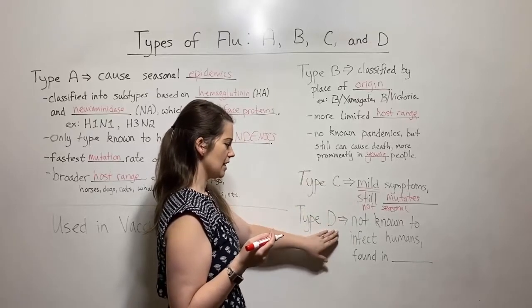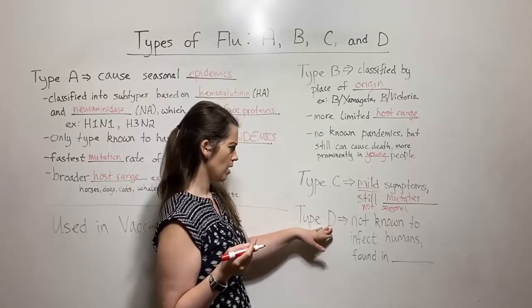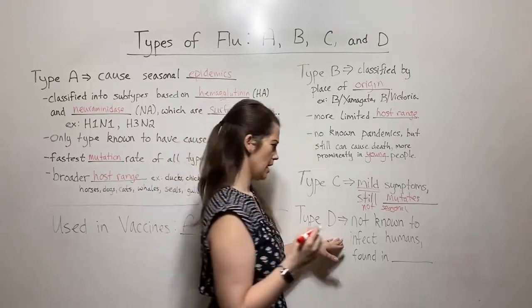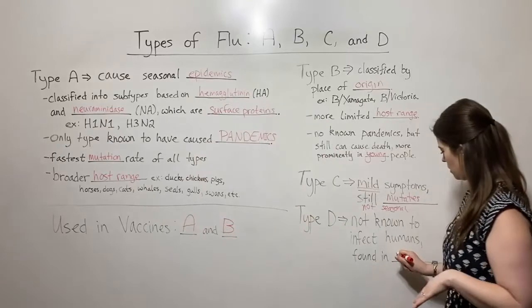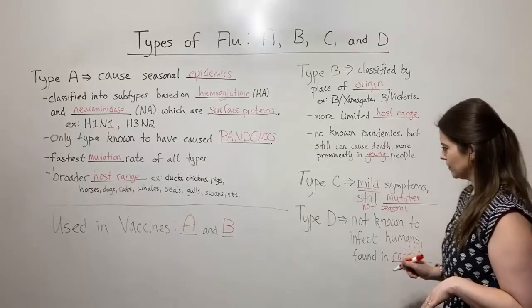And then type D, this one was discovered more recently, I think within maybe about 10 years ago. And it's not known to infect humans at all. It is however, found in cattle.